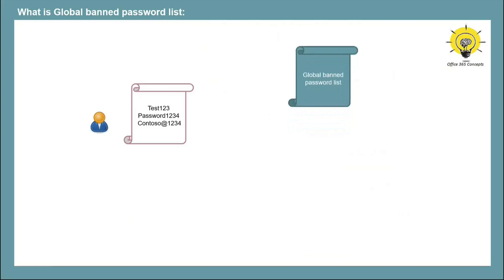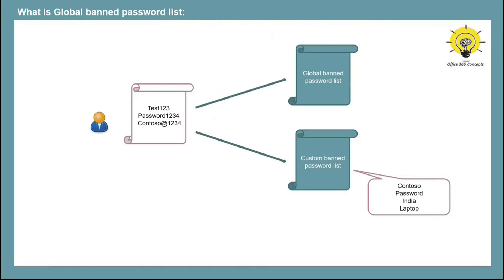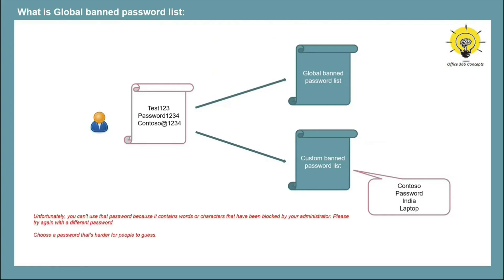As an administrator, you can also add certain terms or words that your users should not use in their passwords. This type of list is called the custom banned password list. Under this list, you can add commonly used terms or words — for example, your company name, name of a location, or brand names. When you add these terms within the custom banned password list, they are automatically combined with the terms in the global banned password list. So when a user tries to change or reset their password, or even when an administrator creates or resets a user's password, the passwords will be validated against both lists. If the characters selected match the global or custom banned password list, the user will receive an error: 'Unfortunately, you can't use that password because it contains words or characters that have been blocked by your administrator. Please try again with a different password.' Or: 'Choose a password that is harder for people to guess.'